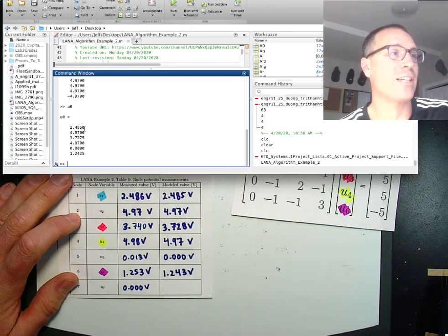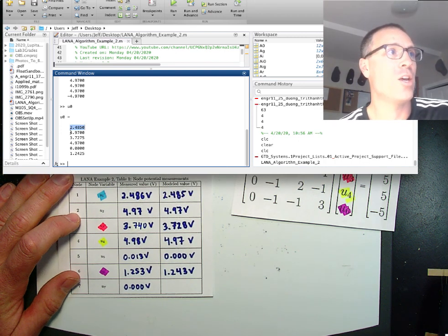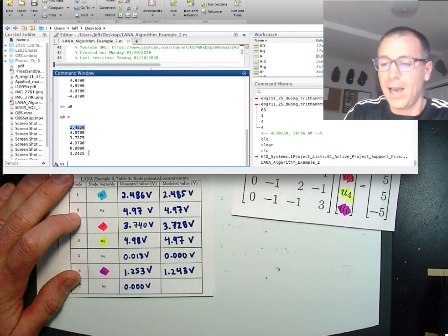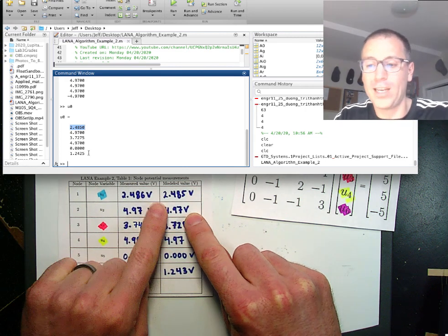These node potentials I can store. This is U1, U2, U3, U4, U5, U6. I've now transcribed those right here.